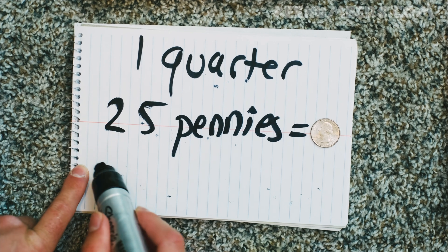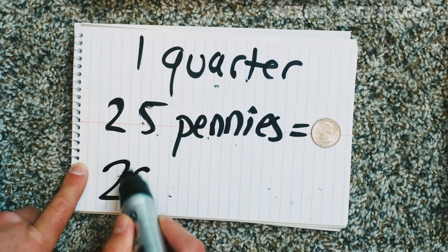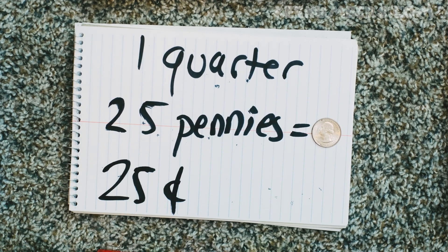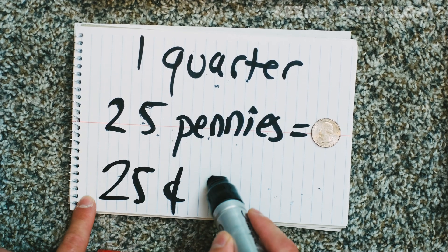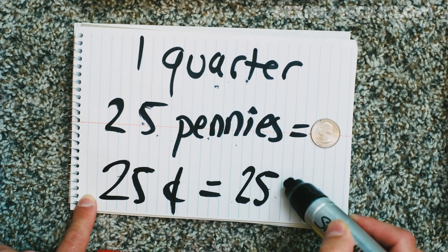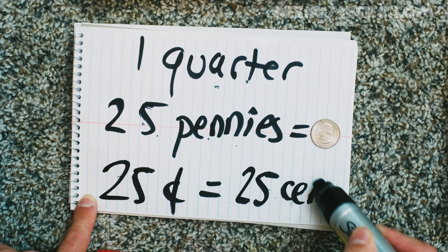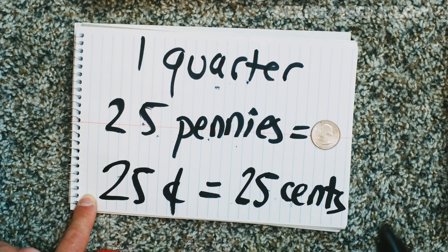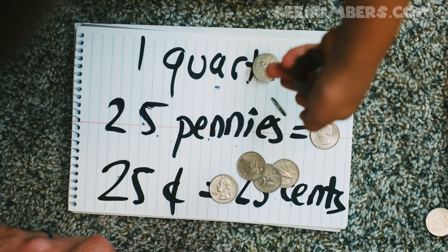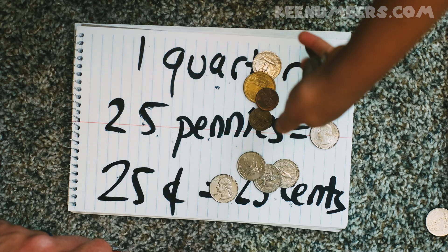A quarter is worth twenty-five pennies. It is twenty-five cents — we say twenty-five C-E-N-T-S. One quarter is worth twenty-five cents.